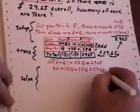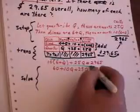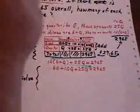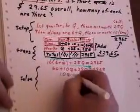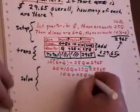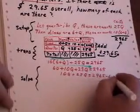Now we bring the 60 across. And that gives us 10Q plus 25Q equals 2965 minus 60.